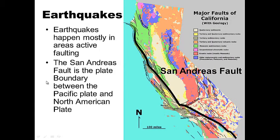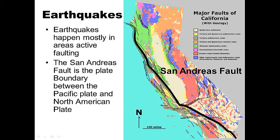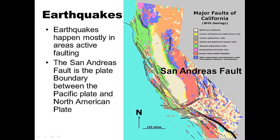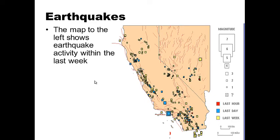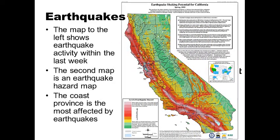Now, earthquakes. California is riddled with earthquakes. They happen most in areas of active faulting, like the San Andreas Fault that runs up through California, but there are many other major faults throughout the state. The San Andreas Fault is the plate boundary between the Pacific Plate and the North American Plate. Up where we live, we're near the Melones Fault, so there is earthquake activity here. The map on the left shows earthquake activity within the last week.